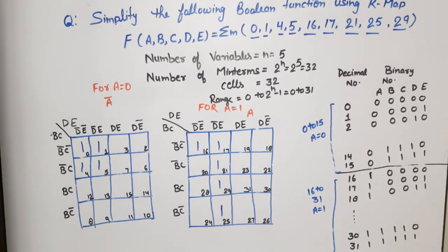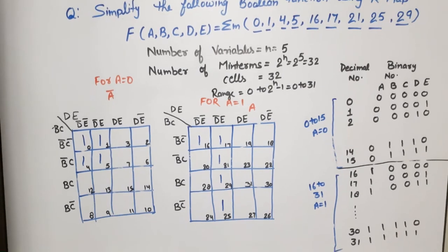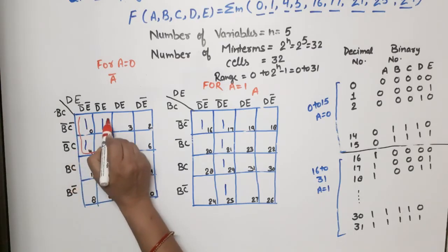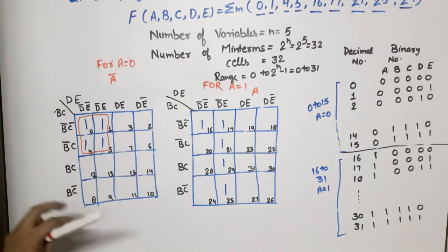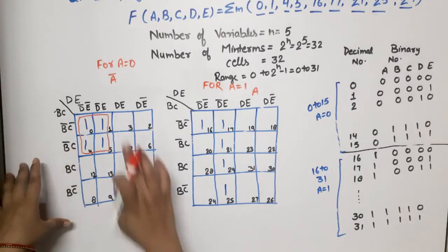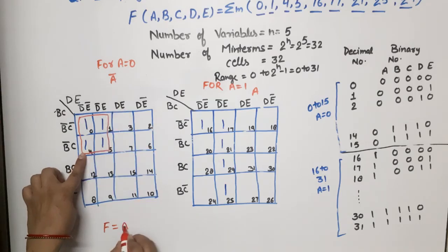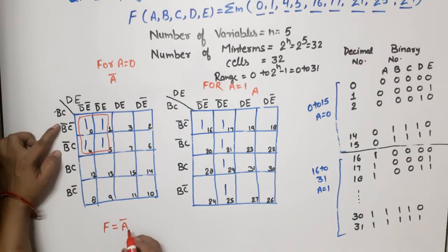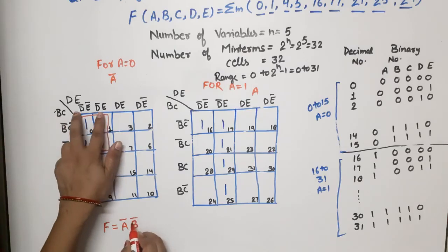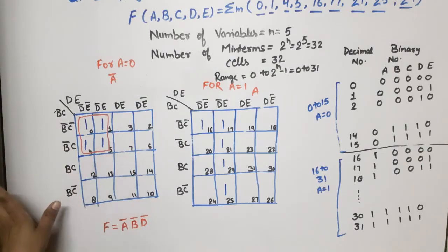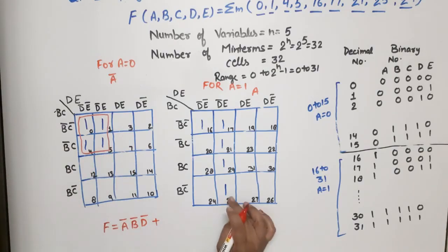Now we have to make combinations — cover the maximum number of minterms with the largest possible groups. Looking at the A=0 K-map, there are only 4 minterms and all of them are together, so they form one group. For this group, A-bar is used. The two rows used share B-bar as common. The two columns used share D-bar as common. So this term gives us A-bar·B-bar·D-bar.